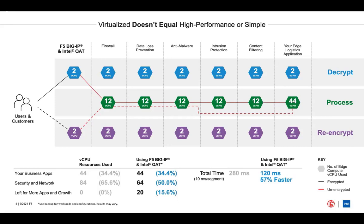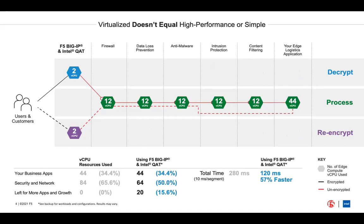Instead of the individual processing you saw before, F5's Big IP controls the traffic in and out of your edge, quickly decrypts the request, and creates a protected environment for your applications and security processes. Each function is then able to inspect the unencrypted request before passing it along directly to the next. The transaction is then encrypted by the Big IP before it is sent back to your customer. Since Big IP is the only process responsible for decrypt and re-encrypt, all those resources you needed to do the same job over and over have now been freed up for you to use.